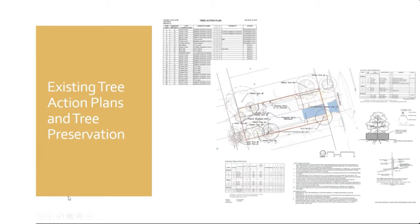What you're seeing now is an example of a tree preservation, removal, and replacement plan required by a specific municipality. In the upper left corner I'm showing a blow-up of what I call a tree action plan — a tree inventory with a column indicating what is going to happen to each specific tree. That might include root pruning or trimming, especially if the structure or landscaping going in would interfere with lower branches. So you make recommendations for those trees — this is something arborists frequently do.